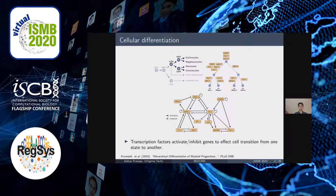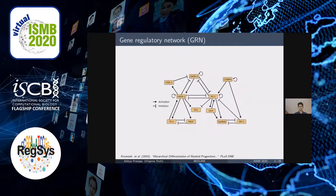As cells move between states, they undergo a process of transcriptional reconfiguration where transcription factors silence genes or activate new genes. This can be captured in what we call a gene regulatory network, or GRN. The nodes in this network are genes or transcription factors, and the edges are between transcription factors and the genes they regulate. The authors of this paper built the network by carefully studying the literature.